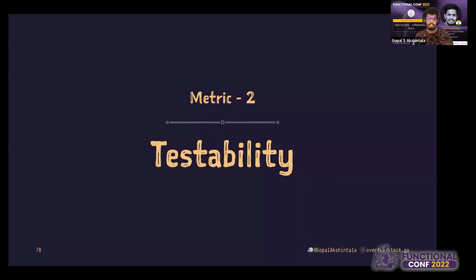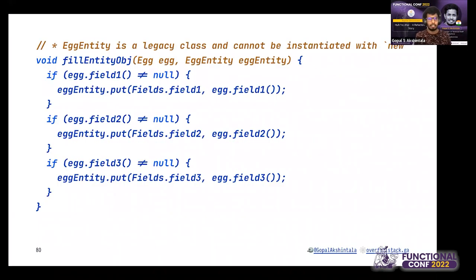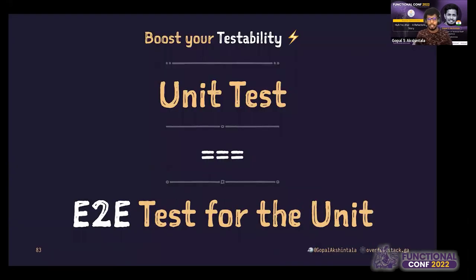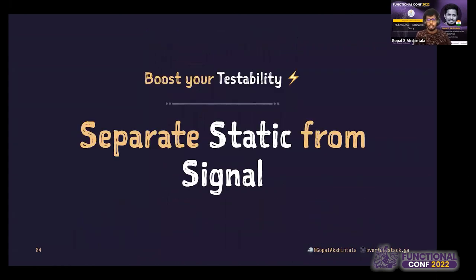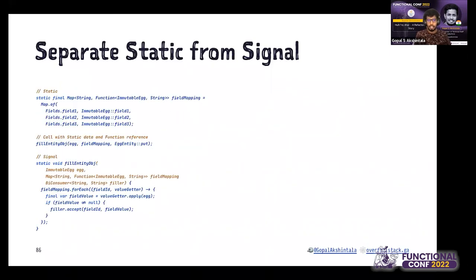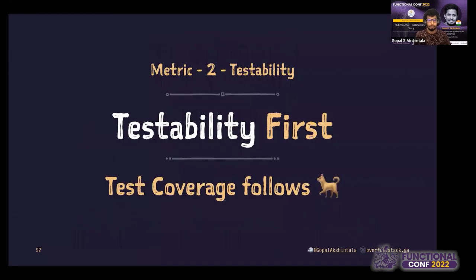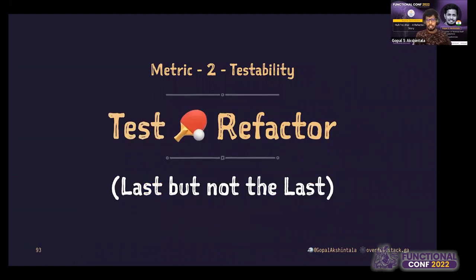The testability part—I just have one tip but I can't go through it because of limited time. I'll show you how brittle tests are written because of it. Unit test is also equal to end-to-end tests—it's not testing internals. You've got to separate static from signal. Testability should be first and test coverage always follows. Test and refactor should happen hand in hand—it's not an afterthought.